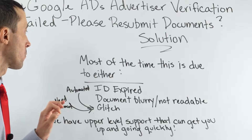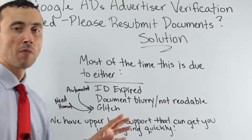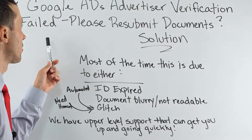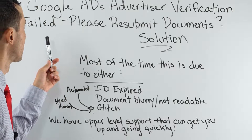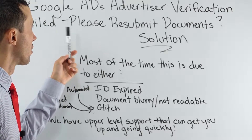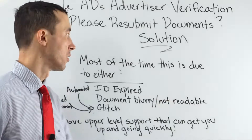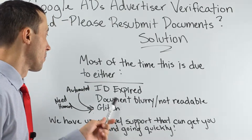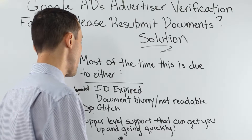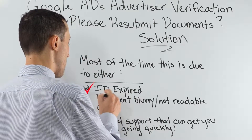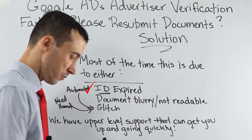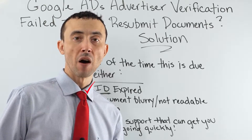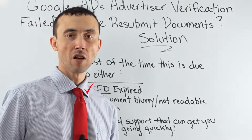Most of the time when you have this issue with advertiser verification and submitting documents, the documents are not good enough for Google. It comes down to three main reasons. First reason is your ID is expired. If your ID is expired, they're not going to take it — bottom line. You need a current document.